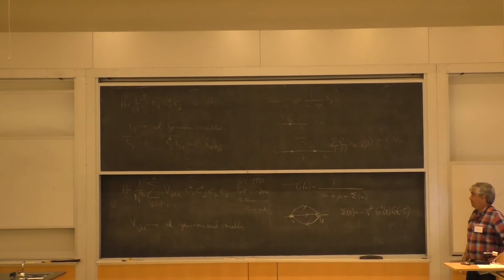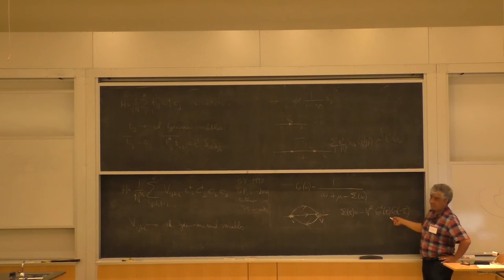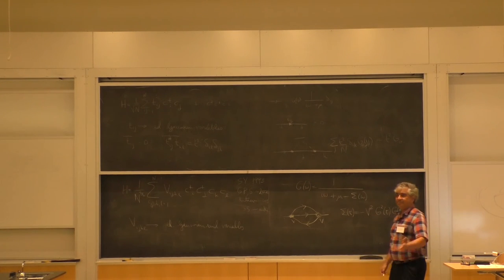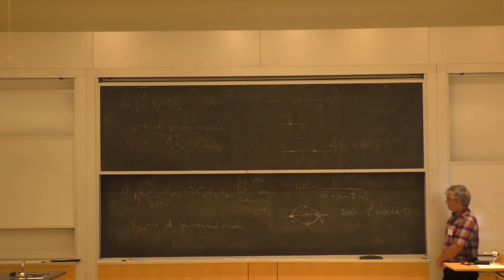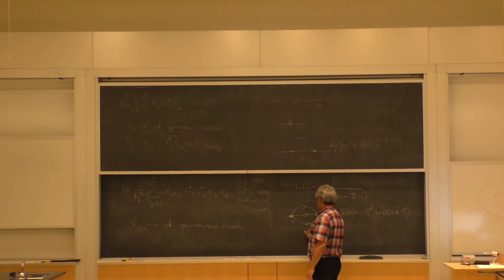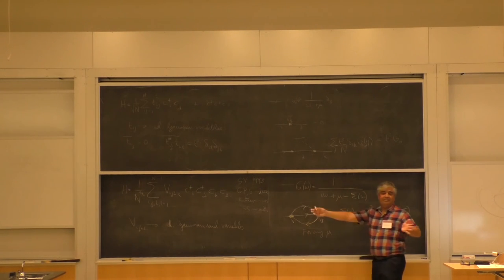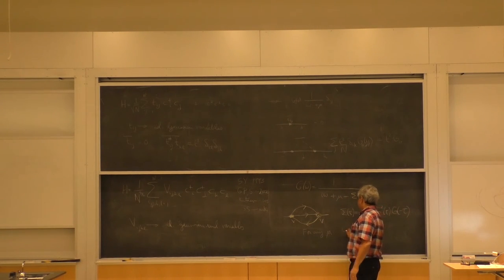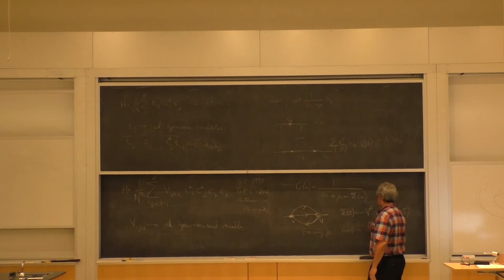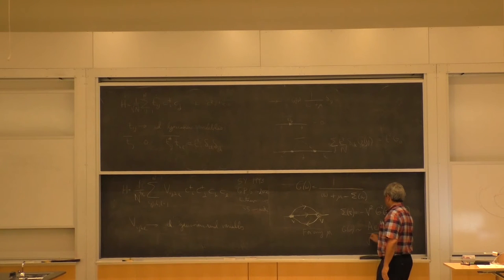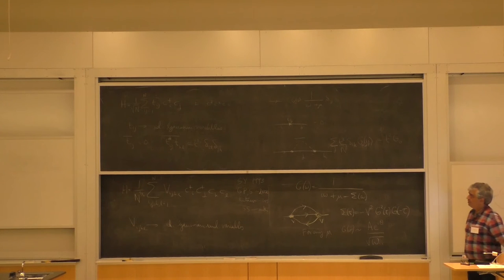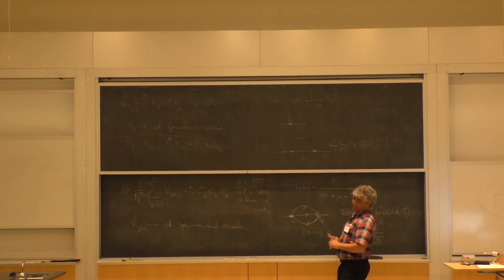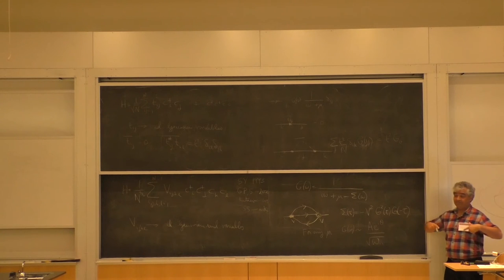So now you have to solve these two equations. They turn out to be quite... you can partially solve them. What you find is that for any mu — it's a compressible state, you can change the density as you want — the Green's function G of omega is some complex number divided by square root of omega. So it's got a local Green's function that diverges as 1 over square root of omega. And that's definitely not a Fermi liquid — it's got a non-Fermi liquid divergence, there's no quasiparticles, there's no poles.